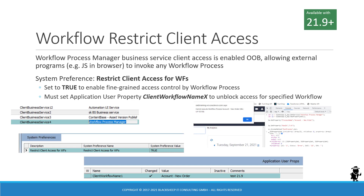This is the default state if you do not change anything. With 21.9, you get a new system preference called Restrict Client Access for Workflows, which is set to false by default — so nothing changes and you can still call any workflow process from browser JavaScript. If you set it to true, however, access to workflow processes is effectively blocked.